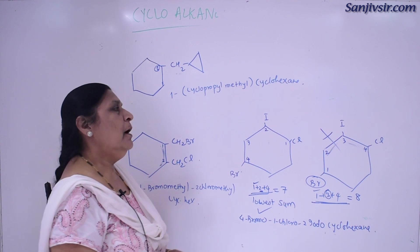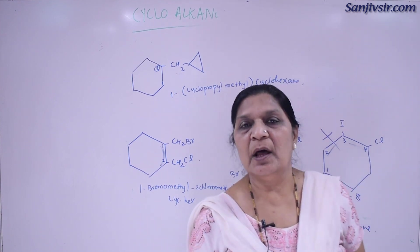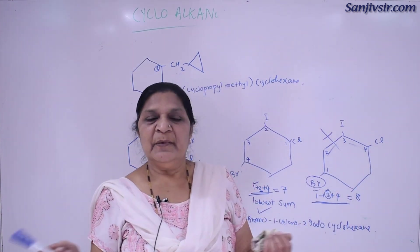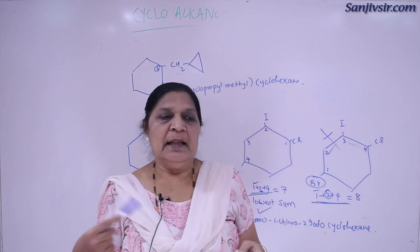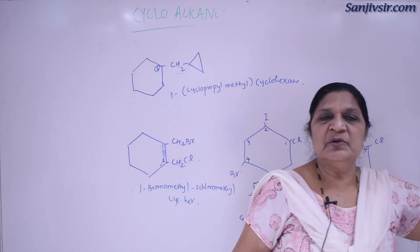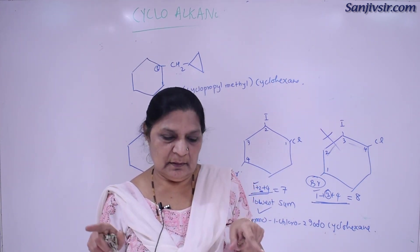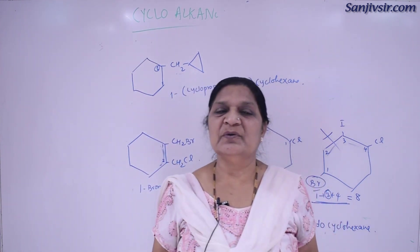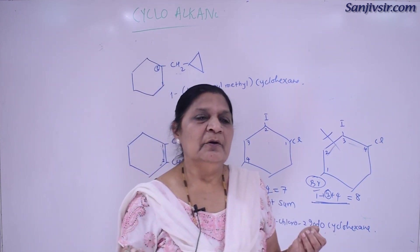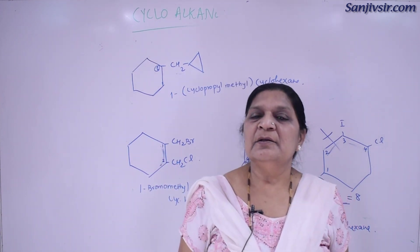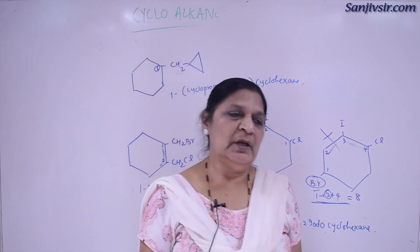Hence, bromine comes first alphabetically but by the rules the name is: 4-bromo-1-chloro-2-iodo-cyclohexane. The other numbering would give the wrong IUPAC name. These examples give you a clear idea about how to write IUPAC names of cycloalkanes. So we have seen straight chain alkanes, branched chain alkanes, substituted alkanes, and cycloalkanes. In the next video we will discuss all functional groups and how to do nomenclature after functional groups.